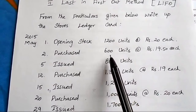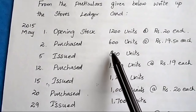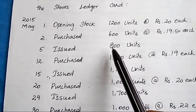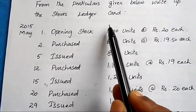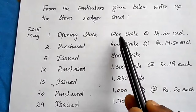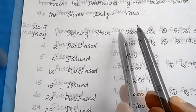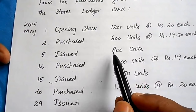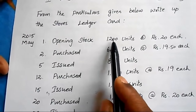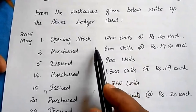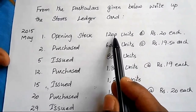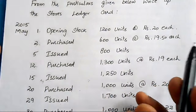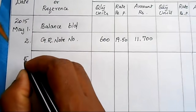On 5th May, issued 800 units to the production department. Write the Material Requisition number as reference. We have 1200 units (opening) and 600 units (purchased on 2nd) — total 1800 units. According to FIFO, we must issue from the earliest lot first. The earliest lot is 1200 units at ₹20, so we issue 800 units at ₹20 each. Amount: 800 × 20 = ₹16,000.